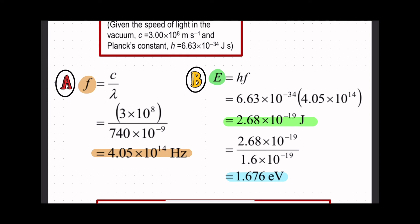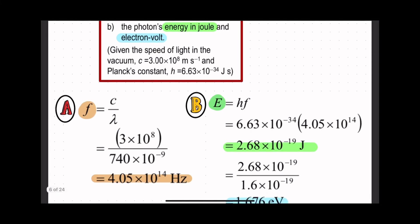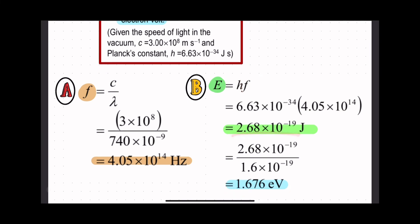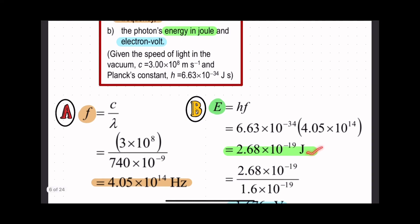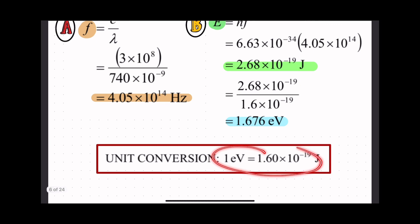For part b, find the photon energy in joules and in electron volts. Make sure you work in SI units. Energy equals hf, so h equals Planck's constant 6.63 times 10 to the power of negative 34 times frequency in hertz. We get the value for energy in joules: 2.68 times 10 to the power of negative 19 joules. This is energy in joules. To convert to electron volts, divide by 1.6 times 10 to the power of negative 19, giving 1.676 electron volts. This is a unit conversion, don't forget.